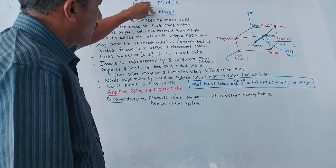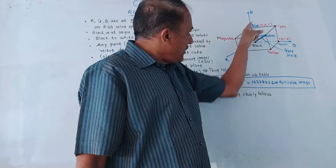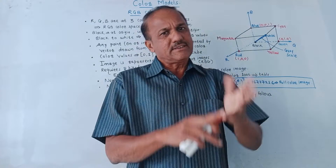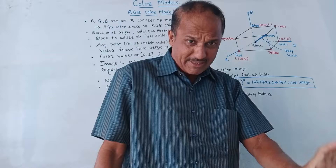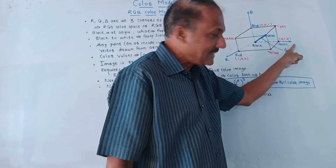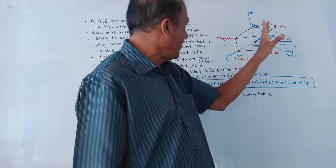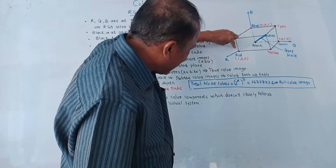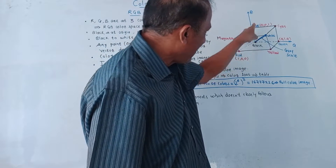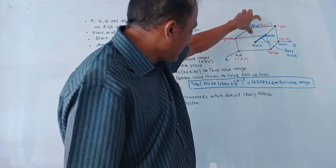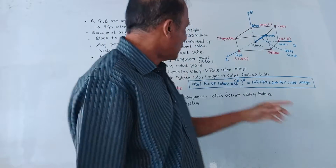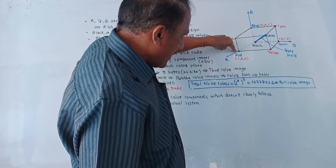First let us talk about the RGB, that is Red Green and Blue color model. This color model is similar to the Cartesian coordinate system. In the Cartesian coordinate system there are three axes: x-axis, y-axis, and z-axis. On the same lines, this color model consists of three axes: the red axis, the green axis, and the blue axis. The primary colors — red, green, and blue — are at the three corners of the main axes.